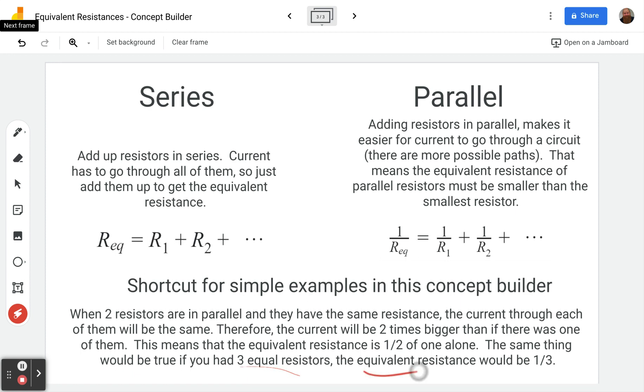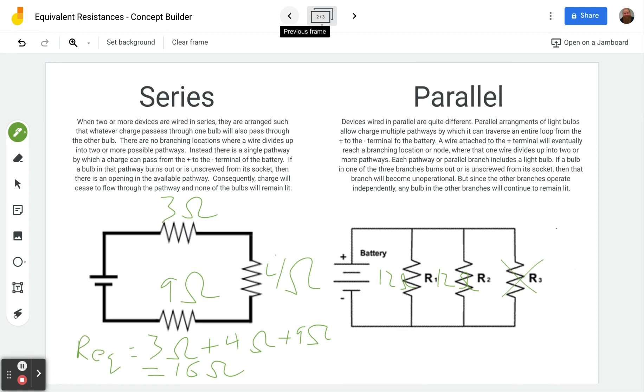And if we have three equal resistors, the equivalent resistance would be one third. So if instead of having no third one here, we had a 12 ohm resistor there. Now we have three 12 ohm resistors, so the equivalent resistance would be four. One third, because there are three of them, and so we have three times as much current. That means one third as much resistance.